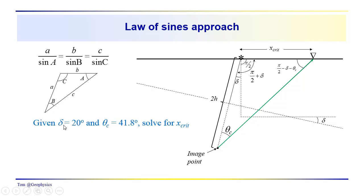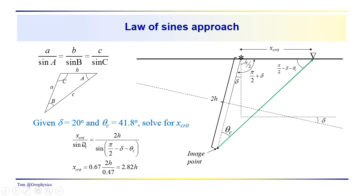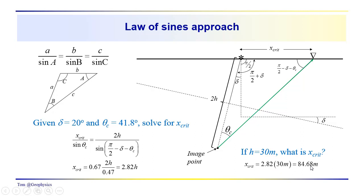So we have all three angles and one side. Assuming a dip delta of 20 degrees, a critical angle of 41.8 degrees, and a layer thickness h of 30 meters, we can use the law of sines: x-crit over sine(theta-critical) equals 2h over sine(pi/2 minus delta minus theta-critical). That ratio of a side to the angle it subtends gives us x-critical. Solving this, the critical distance works out to be 84.68 meters.